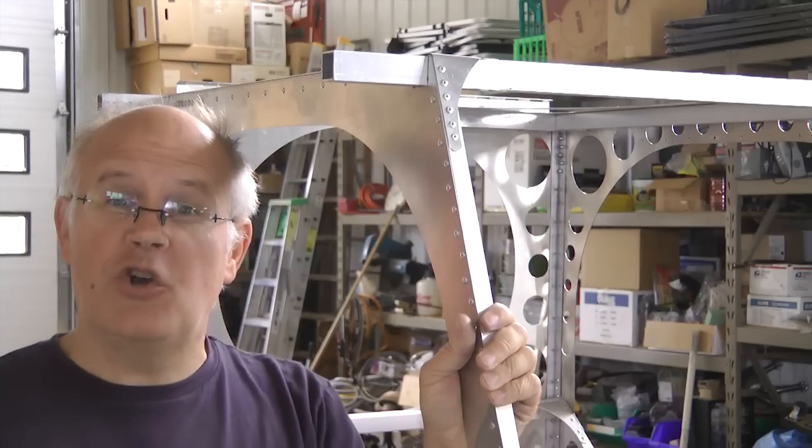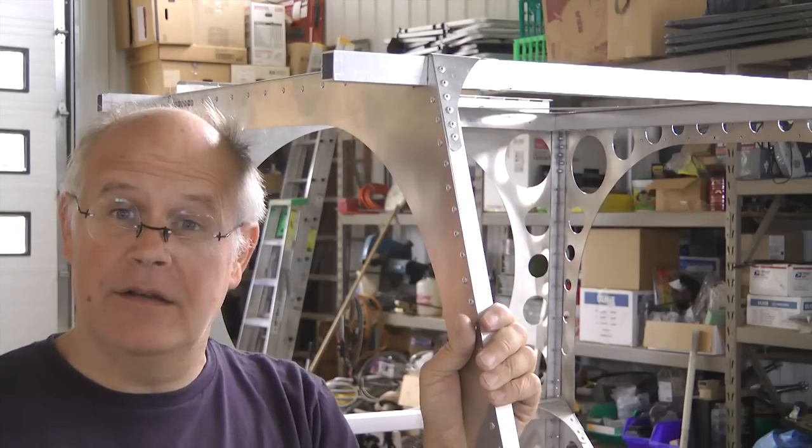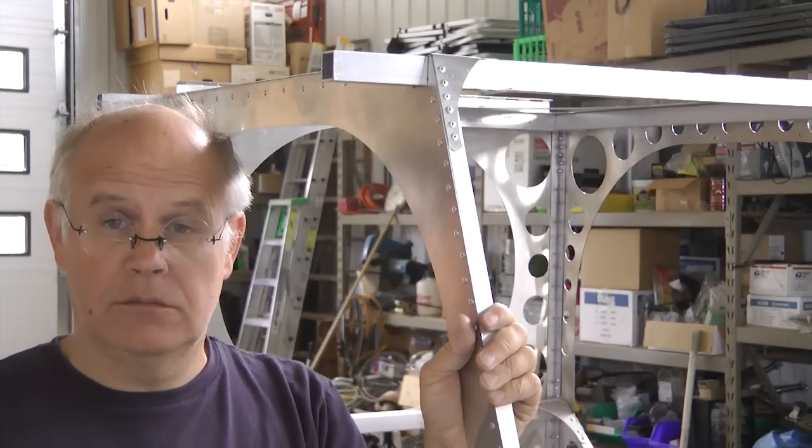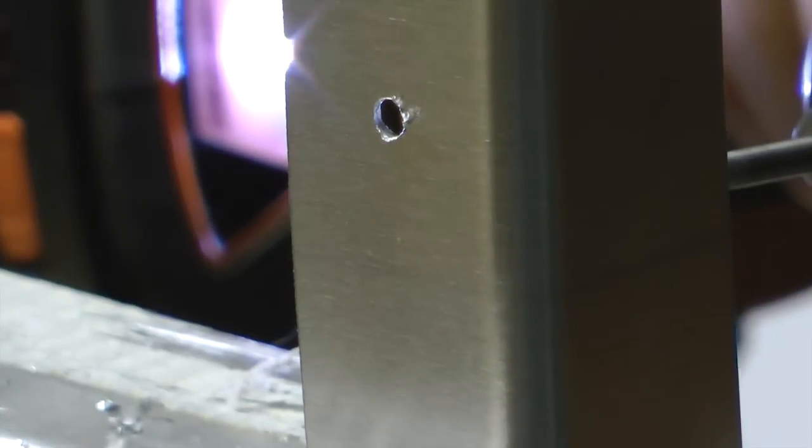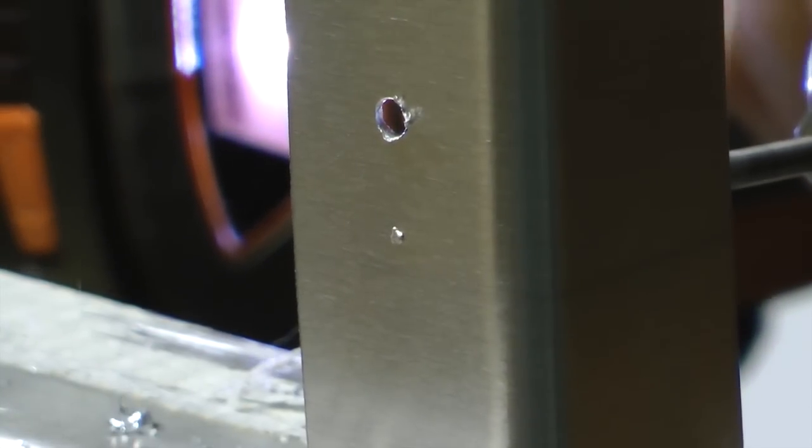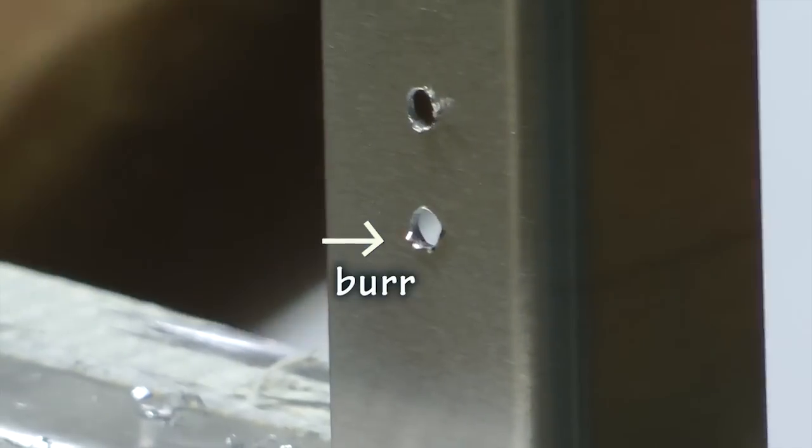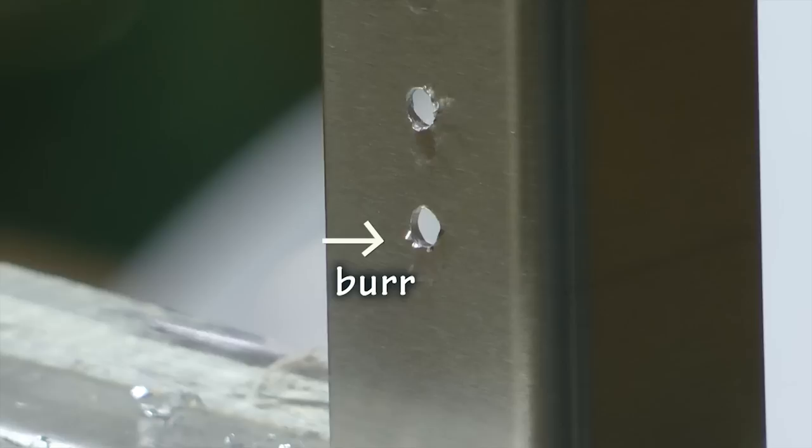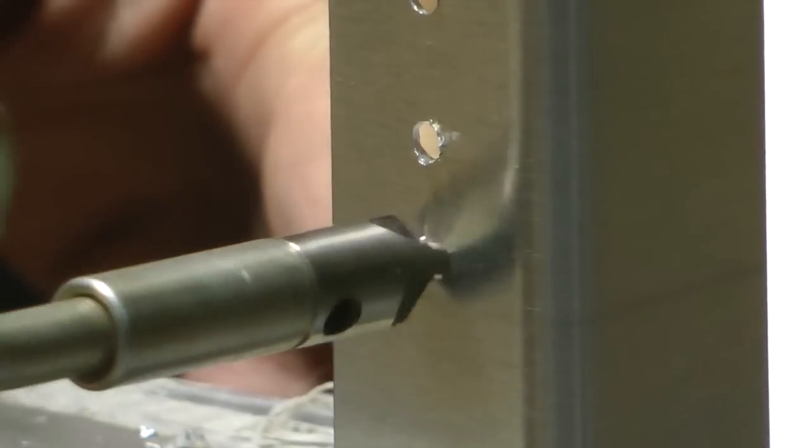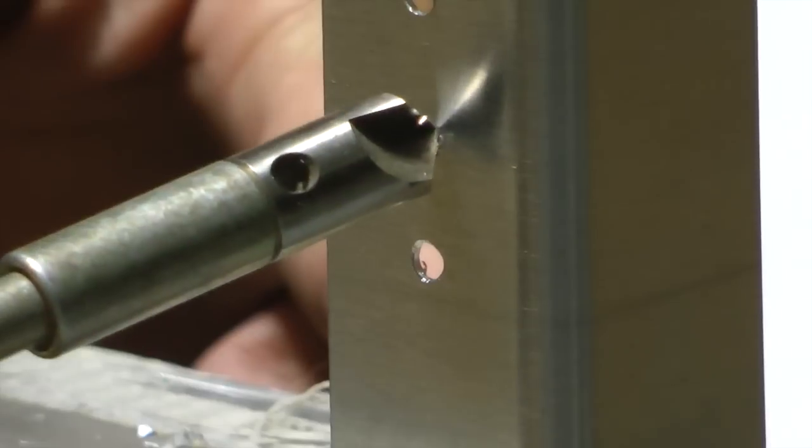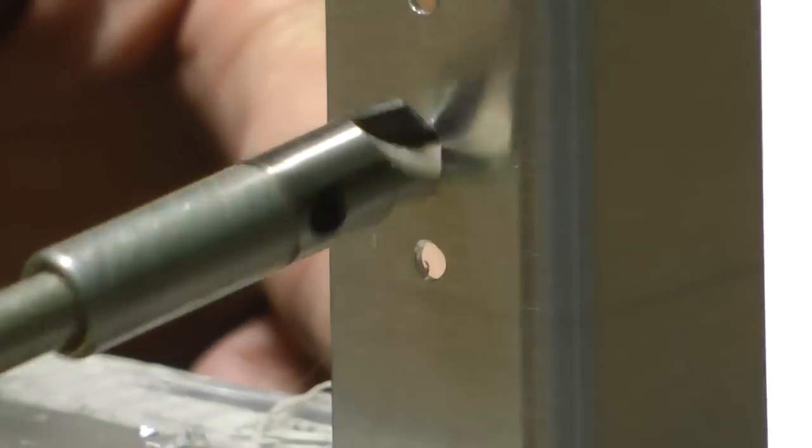so let's talk about it and understand it once and for all. The deburring I'm talking about here has to do with the action we need to take after drilling a hole through a metal like the aluminum we use in our aircraft construction.